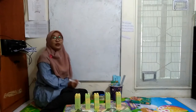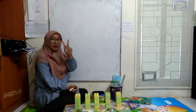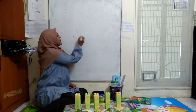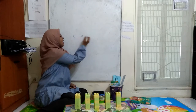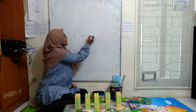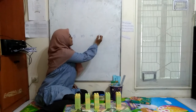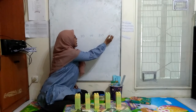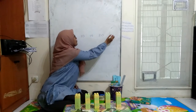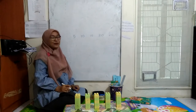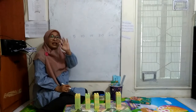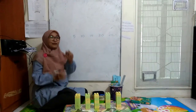As we know, we have learned counting 2 by 2, right? Now it's 5, and then 10, 15, 20, and 25. This is how to count 5 by 5.